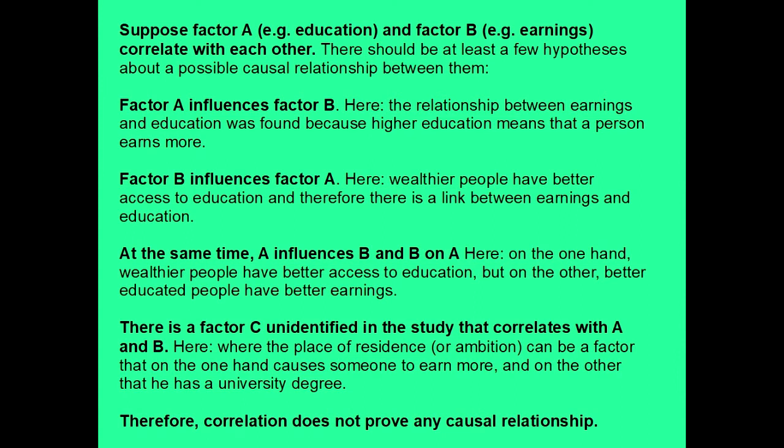Next possibility is that factor B influences factor A. Here, wealthy people have better access to education, and therefore there is a link between earnings and education. Third possibility: at the same time, A influences B and B influences A.